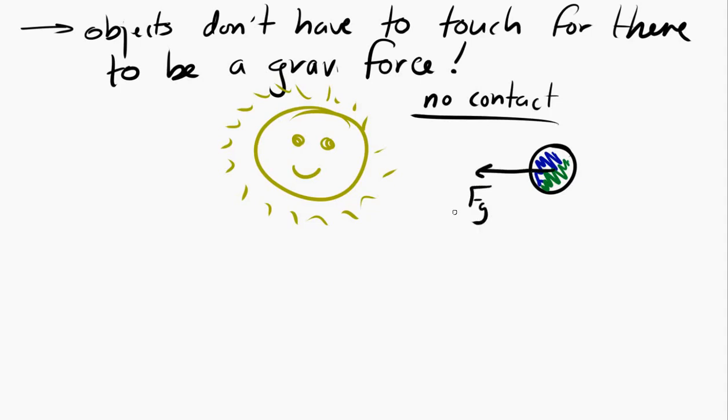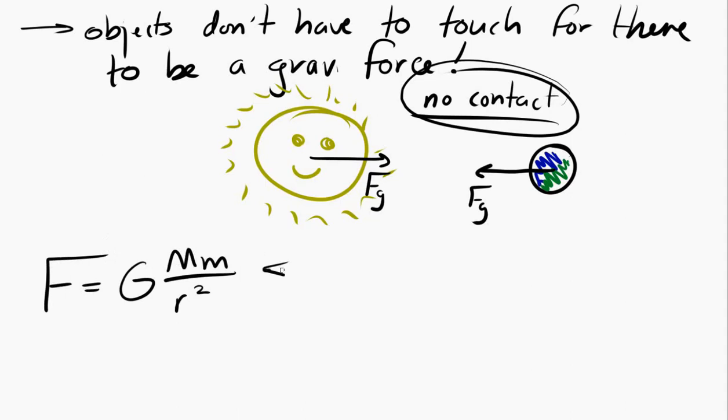So how does it work? Don't worry about it right now. We'll talk about that later. The big point is that this gravitational force equation, Newton's universal law of gravitation, it works. And it works to predict the orbits of many different things out in space. Pretty much everything out in space. So it's very powerful. Let's apply it.